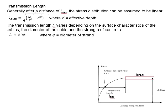Generally, after a distance of L_disp, the stress distribution can be assumed to be linear. This distance equals the square root of L_pt squared plus d squared, where d is the effective depth.